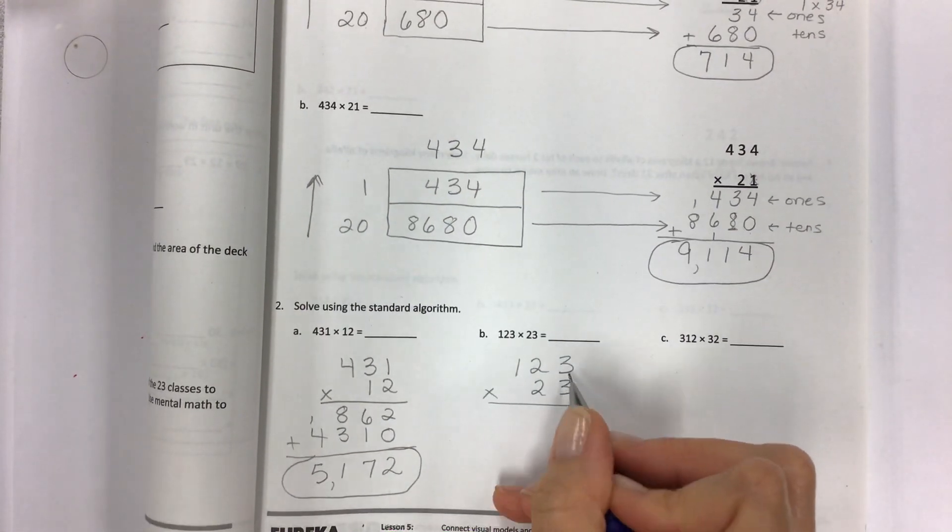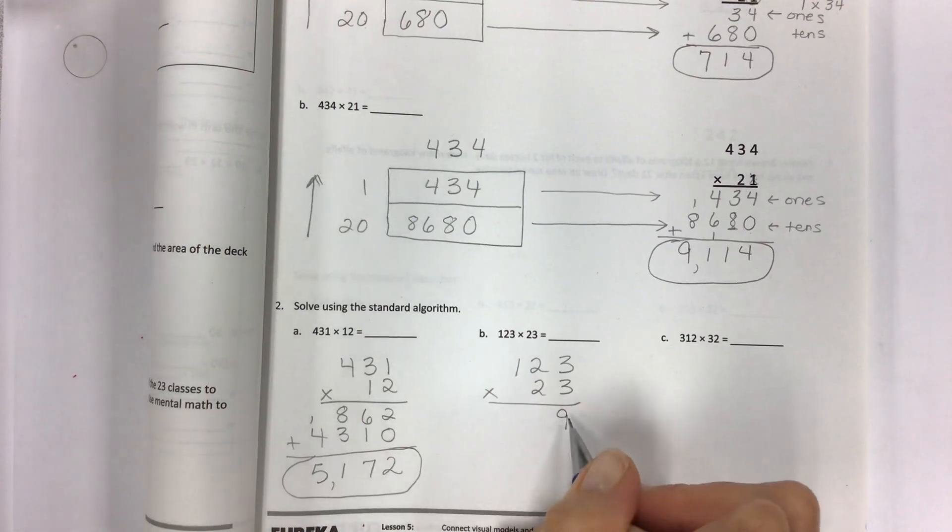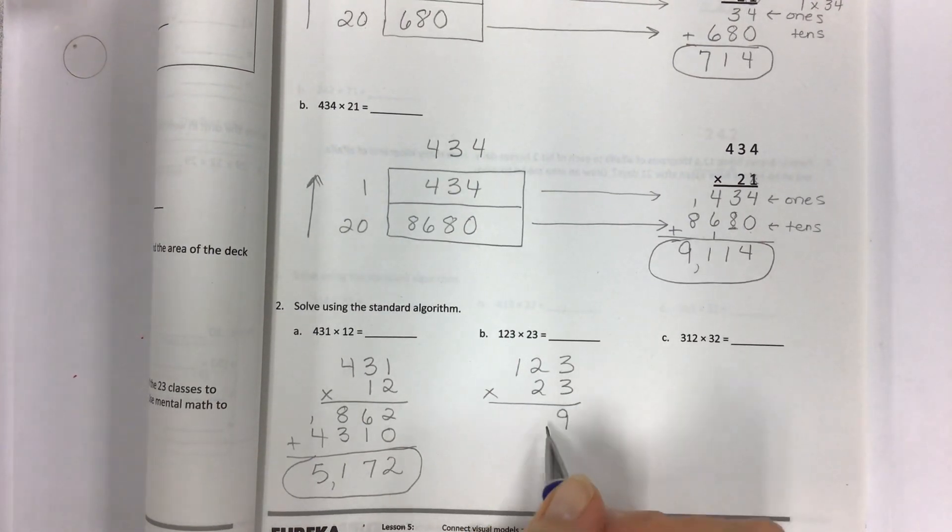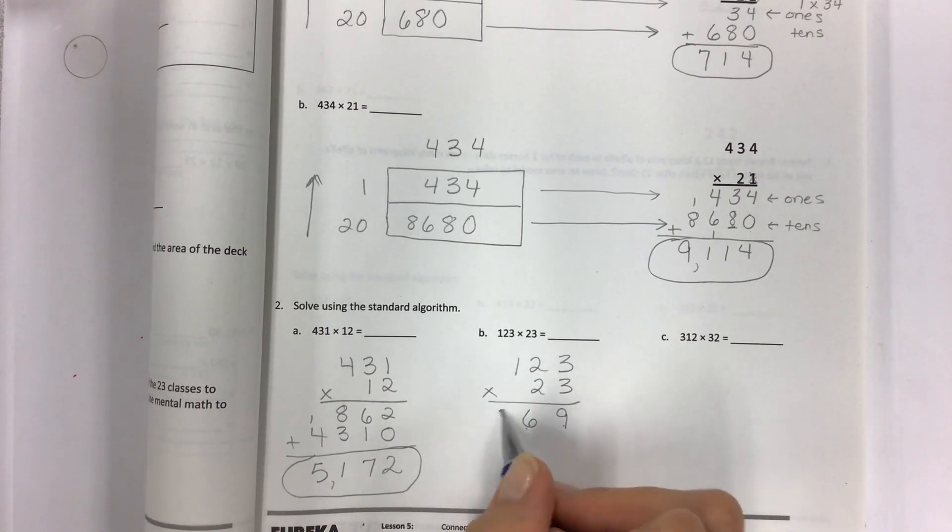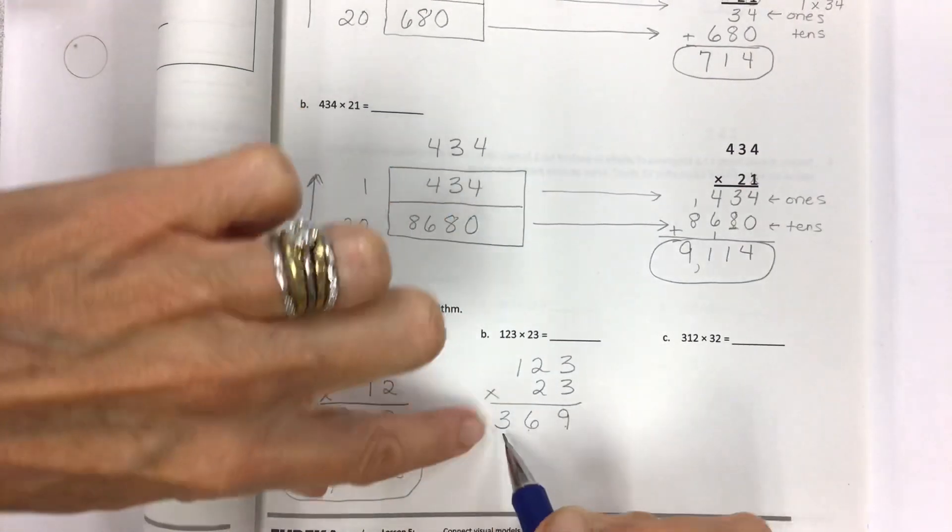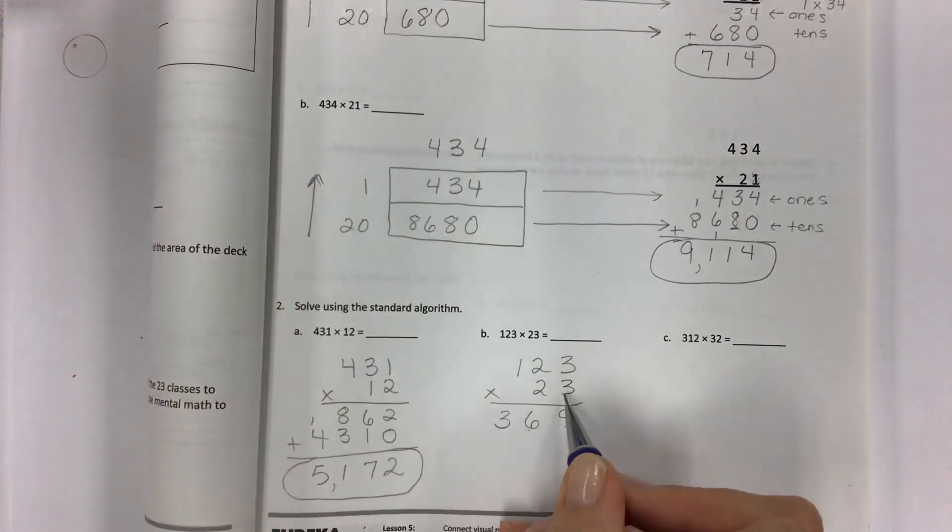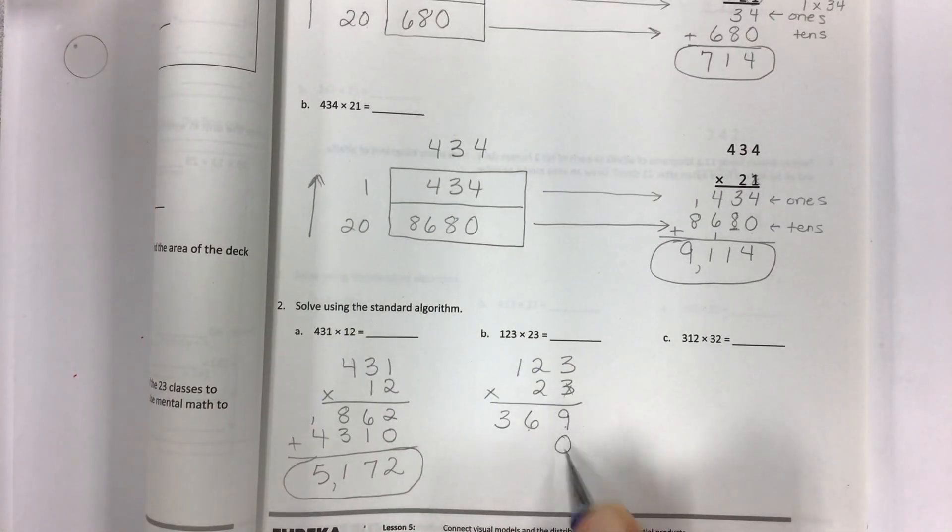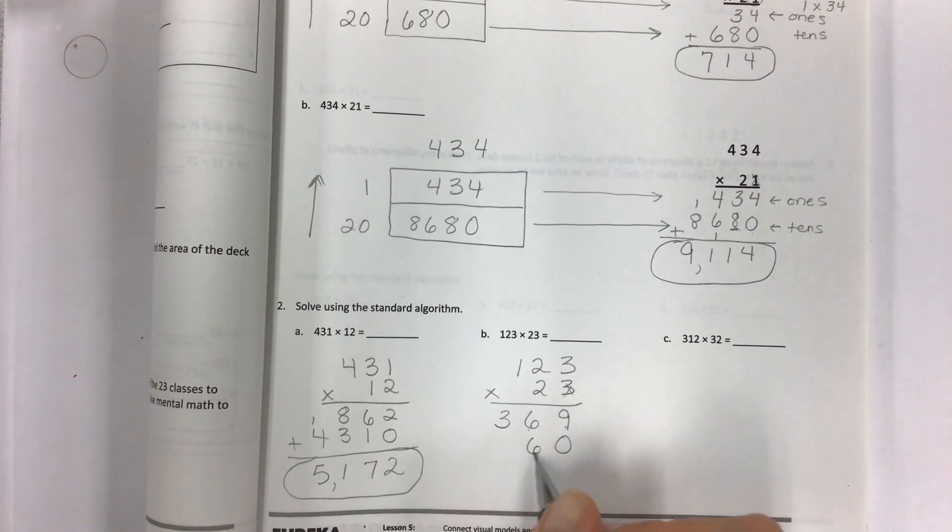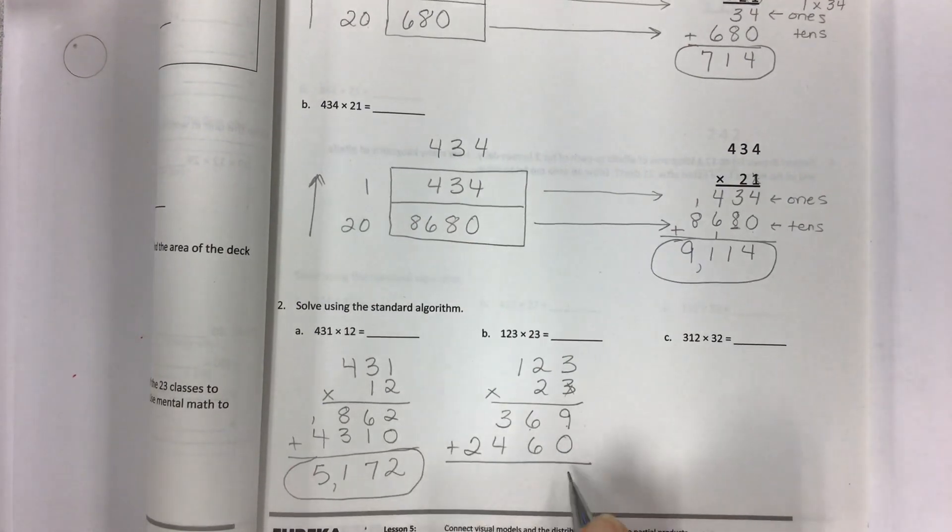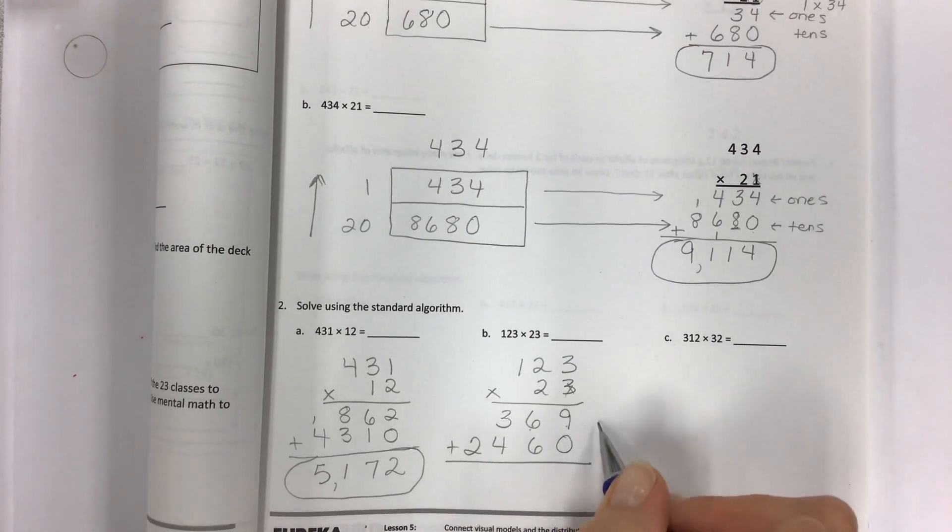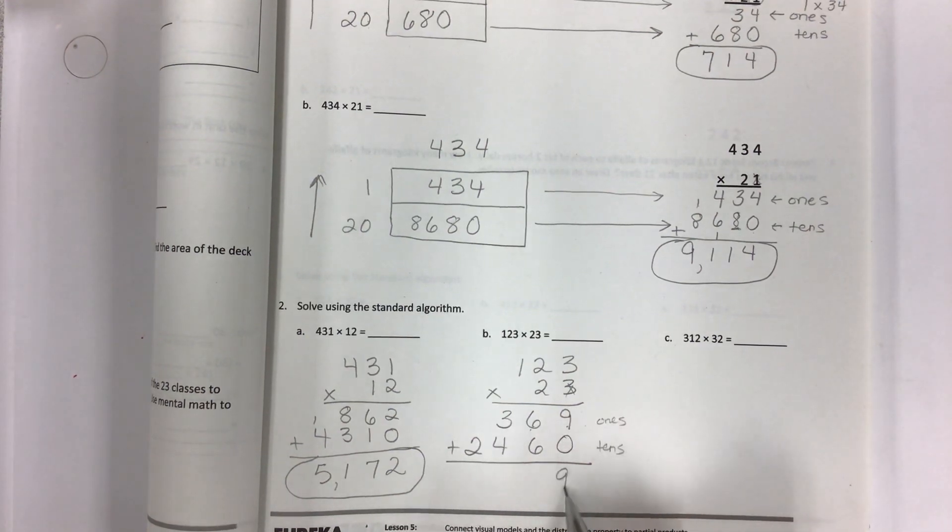3 times 3. This is 3 1's times 3 1's is 9 1's, and then 3 1's times 2 10's is 60. 3 times 1 is 3, and this is the 100's so that's why this is the 100's. I'm finished with the 1's place so I can hold it with a 0. Now I'm on the 10's: 2 times 3 is 6, 2 times 2 is 4, 2 times 1 is 2. Add your partial products. This is the 1's place, this is the 10's place. Add them together, and we get 2,829 for our final answer.